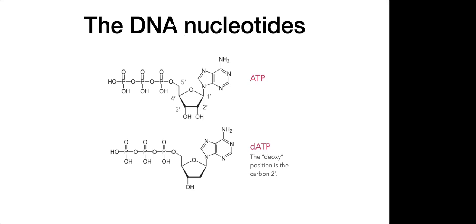You can't really understand how DNA sequencing works if you don't understand DNA itself. On the slides here, you can see the structure of the nucleotides. I'm showing here the structure of ATP. ATP has got three components, like all the nucleotides: the phosphate part with three phosphorus atoms, a sugar, and the base. For ATP, the base is adenine.